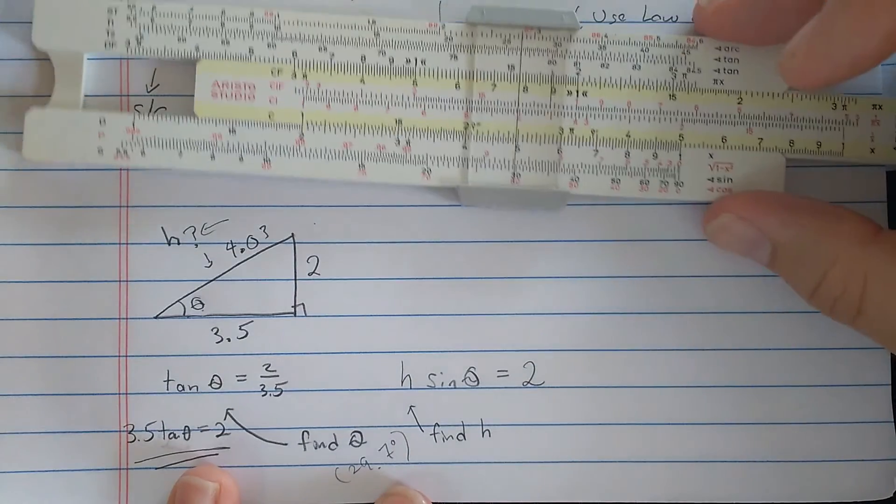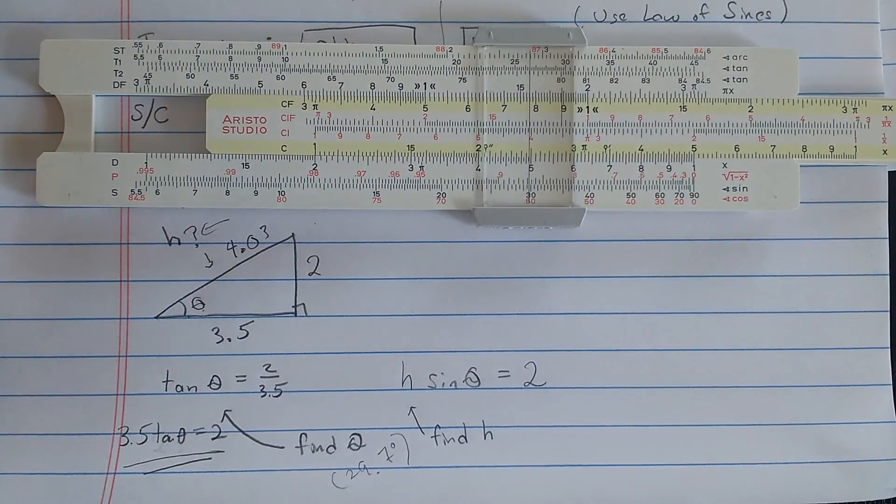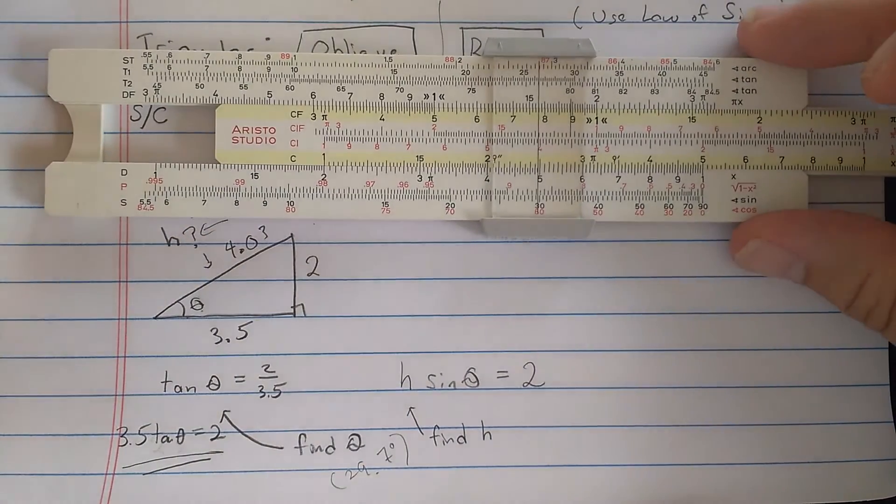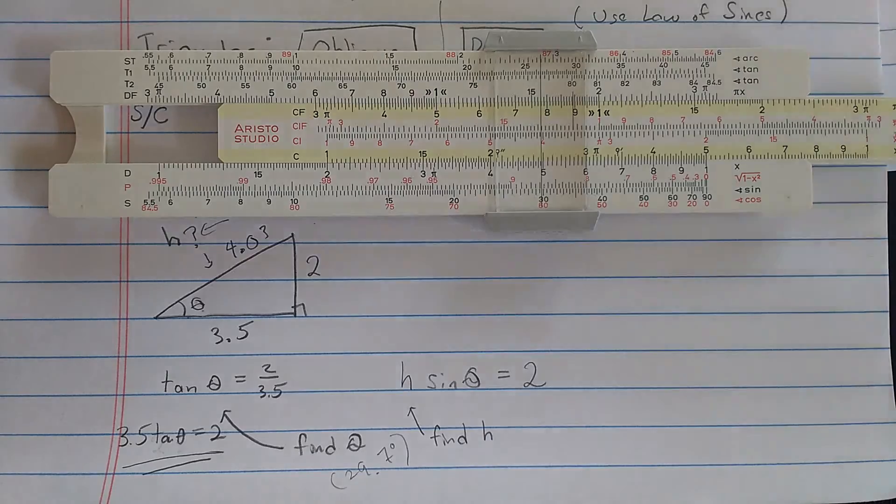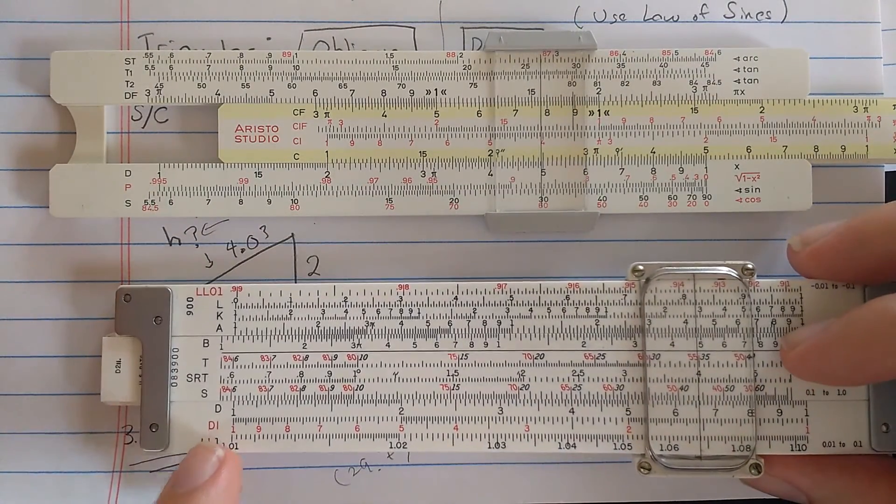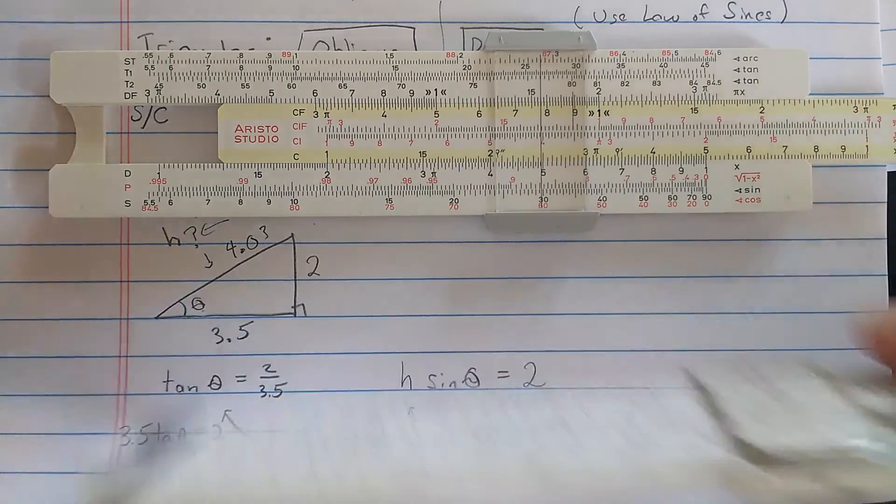So there's a very efficient way to find the hypotenuse given the other two sides using this type of trigonometry setup. You can do something similar with the American slide rule as long as it has the DI scale, which not all of them do.